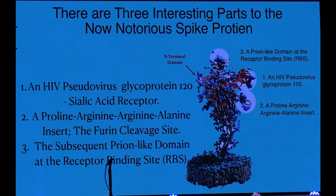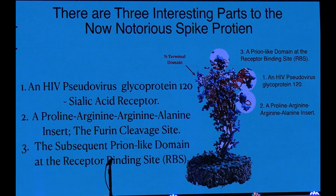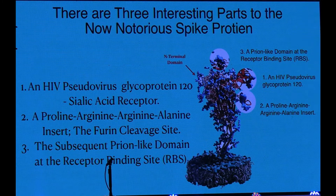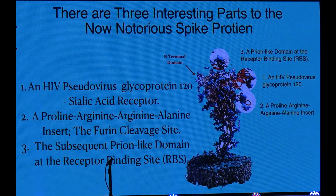It turns out the ACE2 receptor is not the only attachment mechanism. It attaches to the sialic receptor, then goes to H2, then into ACE2, then TMPRSS2 — transmembrane protease serine 2 — then the furin cleavage site, and finally into neuropilin-1. It's more complicated than just H2, but that's good because clindamycin actually works on TMPRSS2.